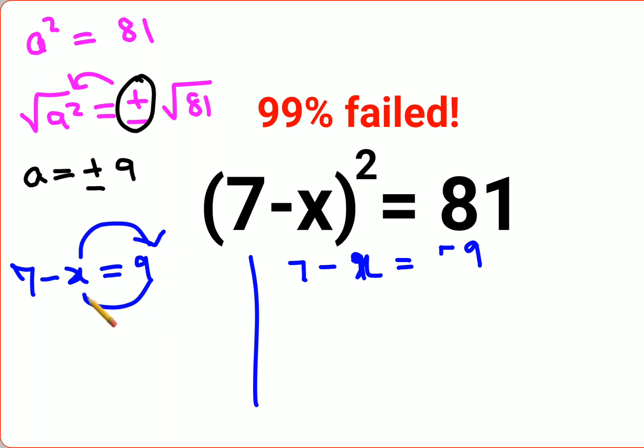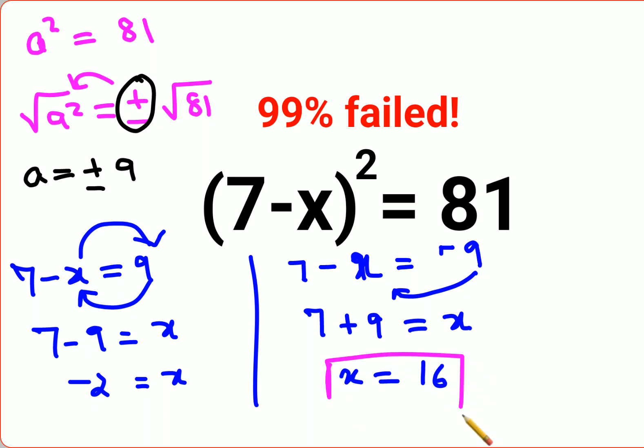So we have minus 2 equals to x. And this over here is 7. The negative 9 when taken on this side becomes positive 9, and negative x when taken on this side will come positive x. So x equals to 16. So we can say the value of x is either minus 2 or 16.